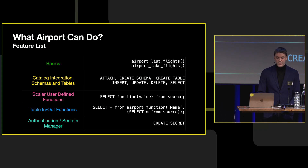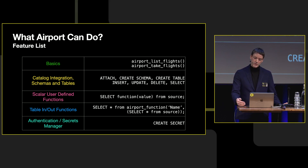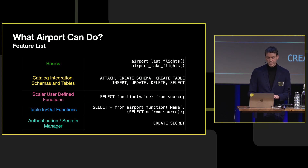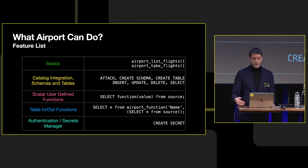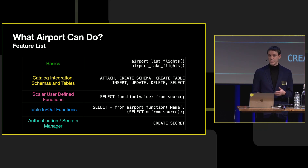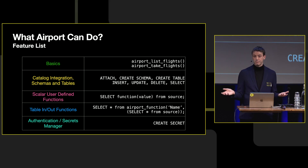In review, the feature list of airport starts at the basics — you can list flights on the flight servers and take flights. Then you move into catalog integration, meaning airport can register tables and you can do SELECTs, UPDATEs, and DELETEs into those tables. Then we have scalar user-defined functions and table-in-out functions. Airport is also authenticated, allowing different users to see particular data — the server can decide what data to return based on identity, enabling row-level and column-level filtering.